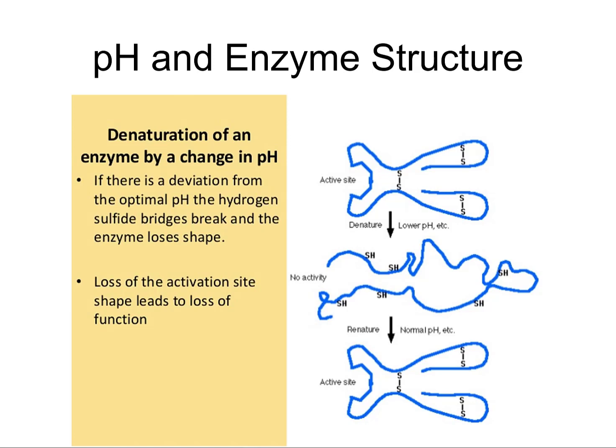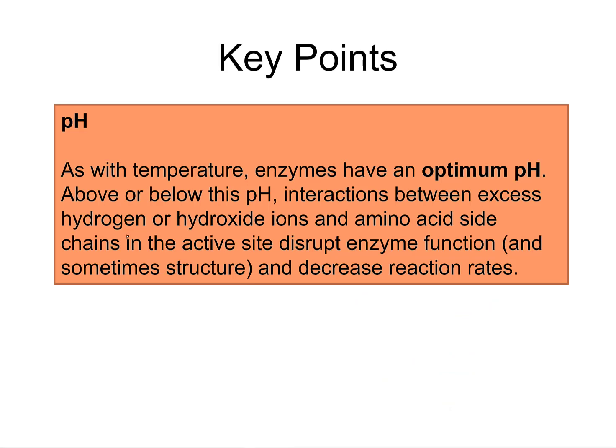You can also change the pH back — the disulfide bonds will reform and the enzyme will regain its activity, so structure and function return. As with temperature, enzymes have an optimum pH. Above or below this pH, interactions between excess hydrogen and hydroxide ions — that's the inverse of hydrogen in pH — disrupt enzyme function by altering the amino acid side chains and active sites, decreasing the enzyme's ability to function.